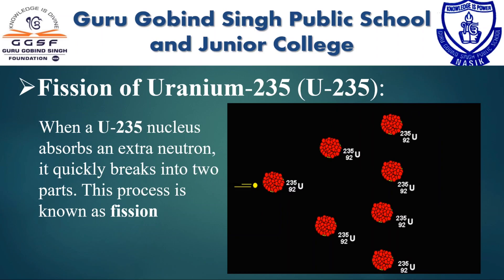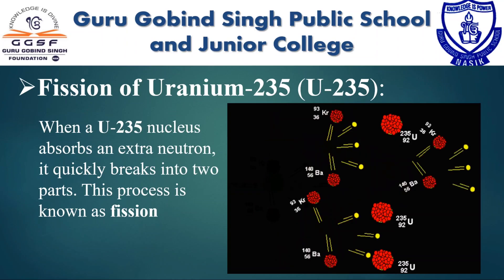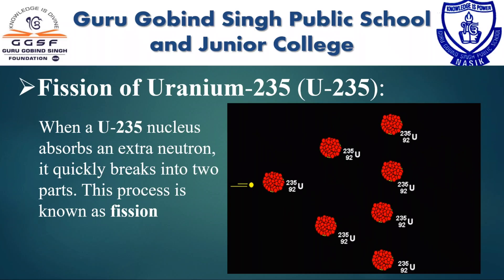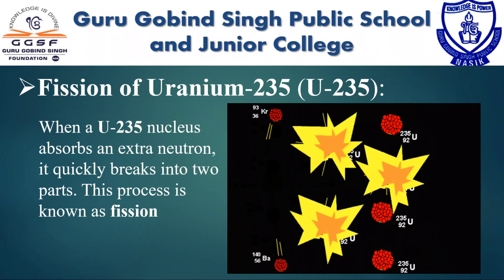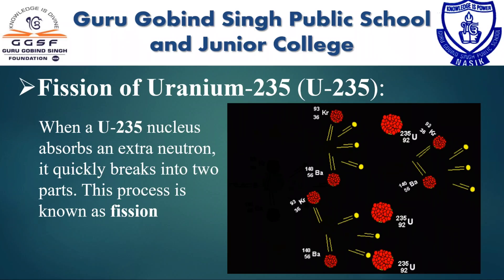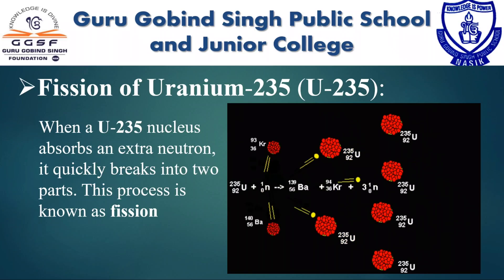Let's see the example of uranium-235. In the nucleus of each atom of uranium-235 there are 92 protons and 143 neutrons, for a total of 235. When a uranium-235 nucleus absorbs an extra neutron, it quickly breaks into two parts. This process is known as fission. Each time a uranium-235 nucleus splits, it releases two or three neutrons.